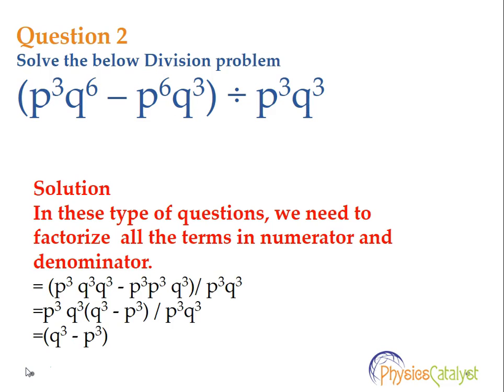Again the concept is the same. We need to factorize all the terms in the numerator and denominator. Factorizing the terms, we get p cube q cube times q cube minus p cube times p cube q cube, divided by p cube q cube.